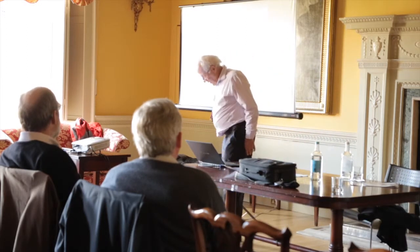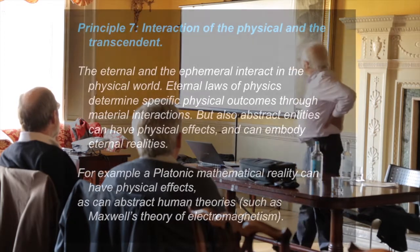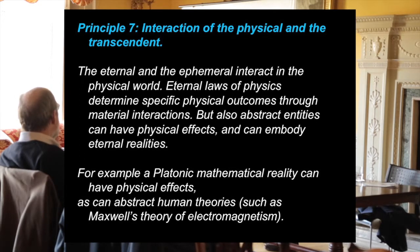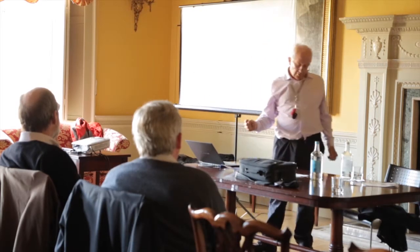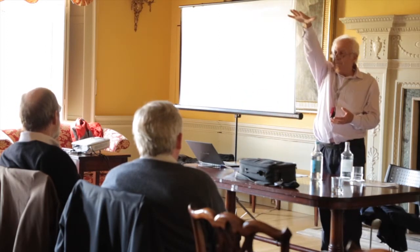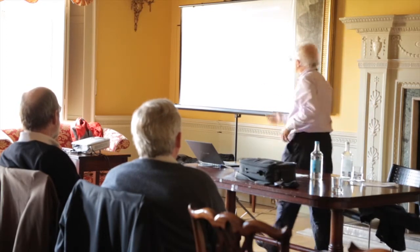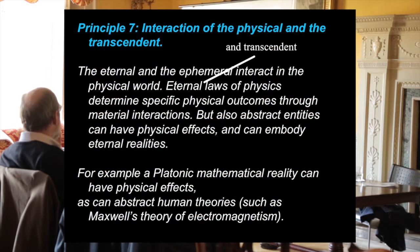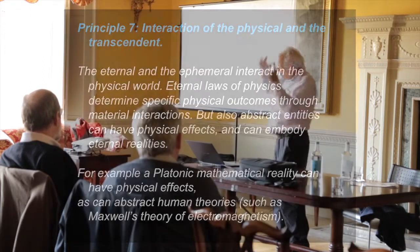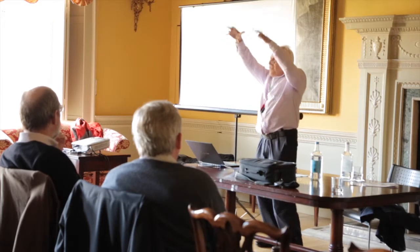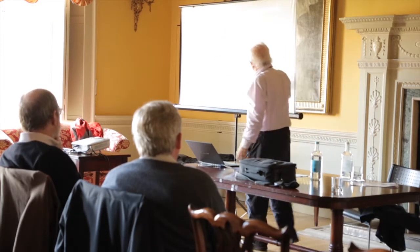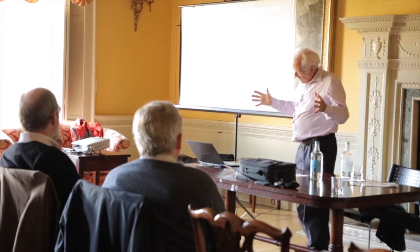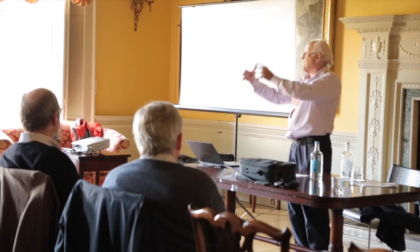The final principle is the interaction of the physical and the transcendent. There are eternal laws of physics — unchanging patterns of behaviour which are the same at all times and all places, before decoupling in the universe, and they will be the same when we all vanish. They're eternal and transcendent. These eternal laws determine physical outcomes through material interactions. But the laws of physics are not physical things — they are the abstract basis which governs how the physical things behave. They embody eternal realities in the sense that the conservation laws are eternal realities, held at all times, all places, and everywhere.